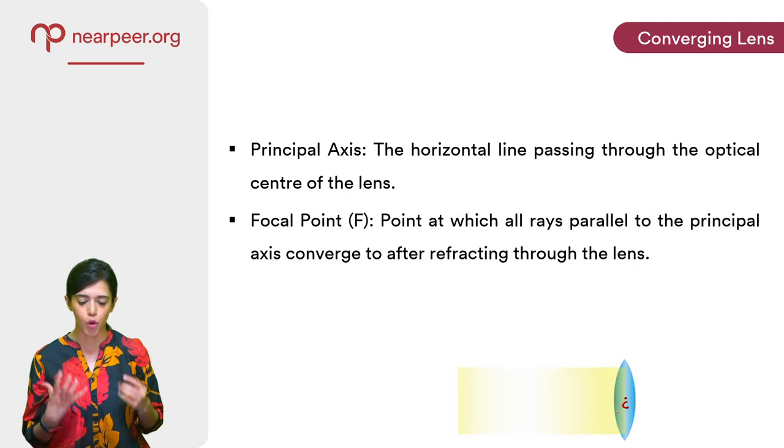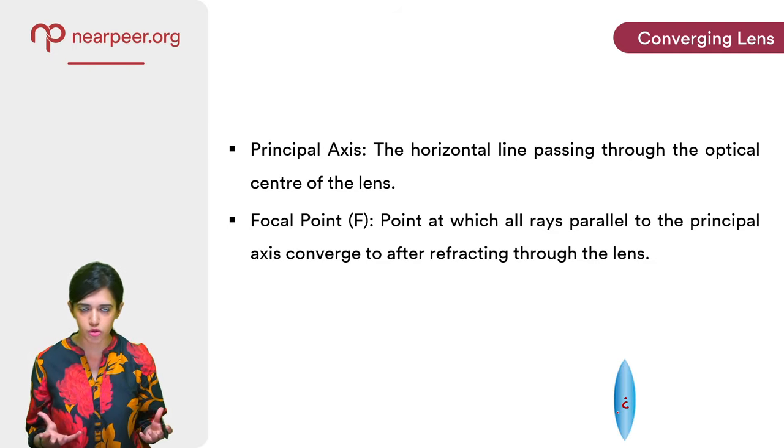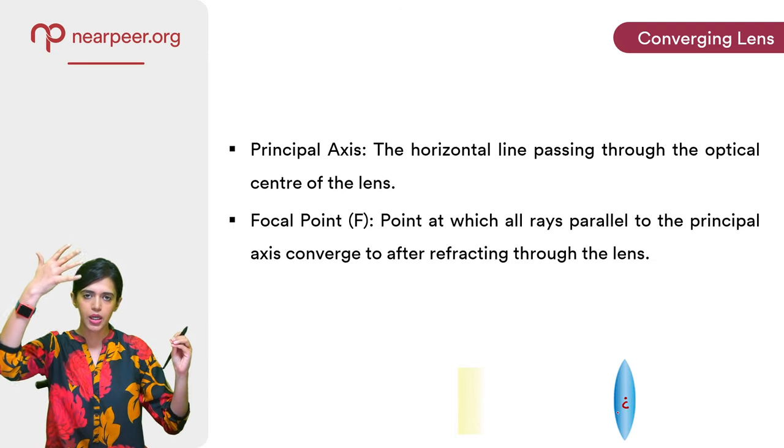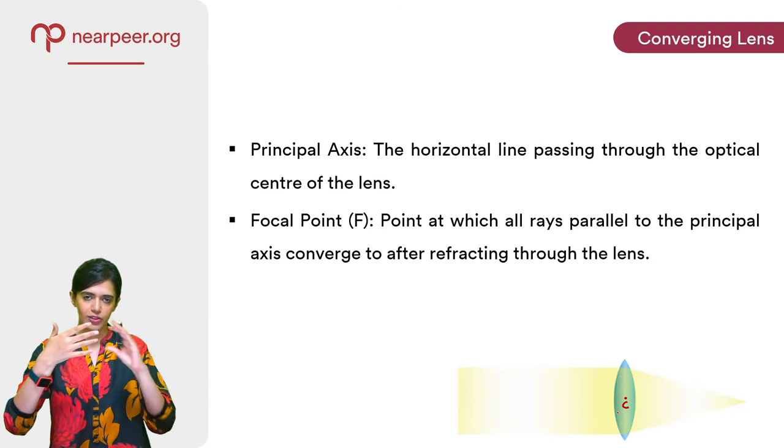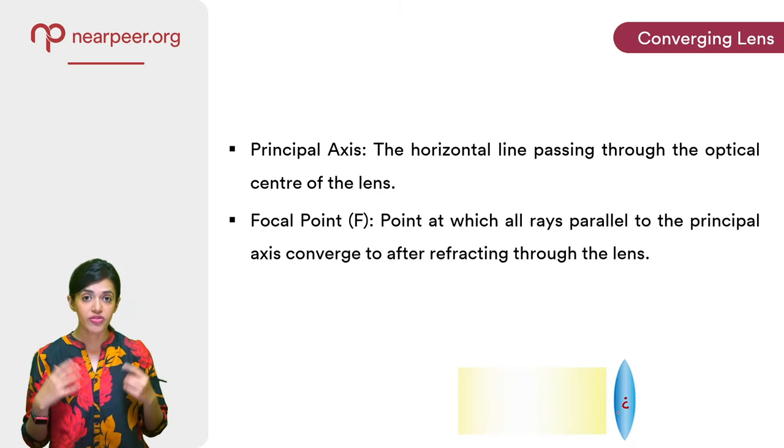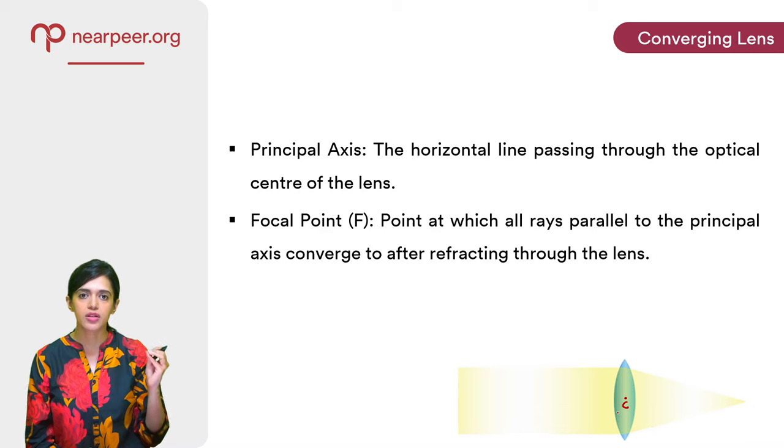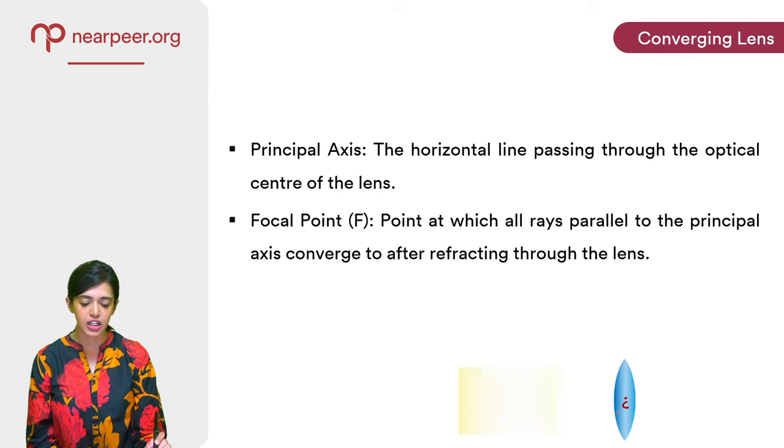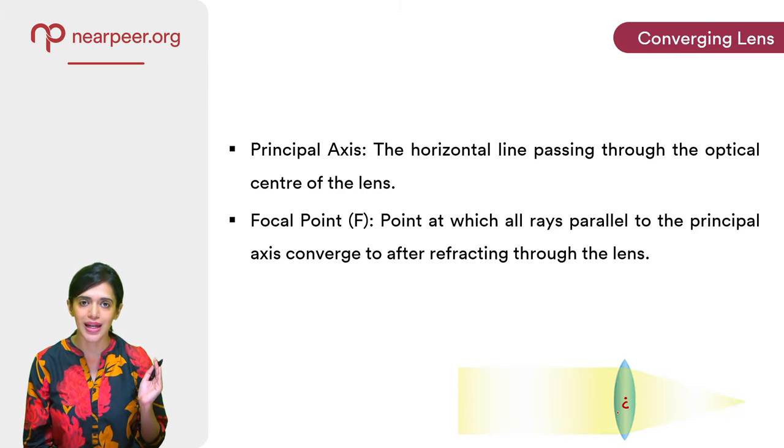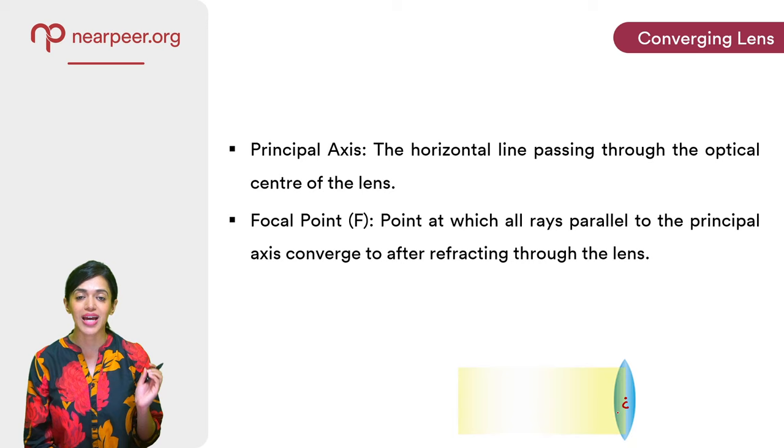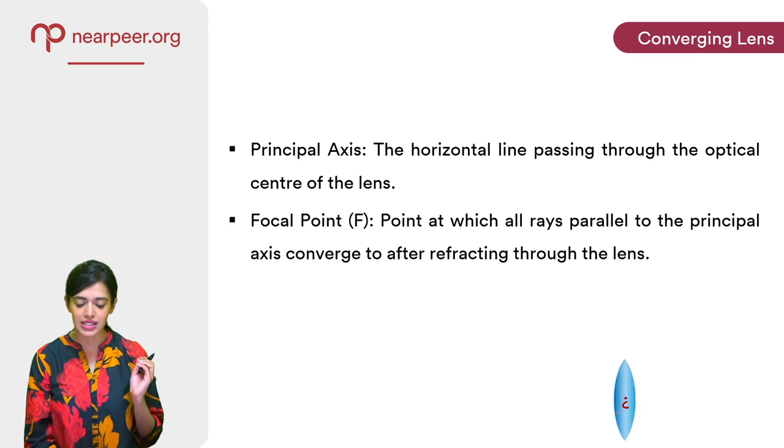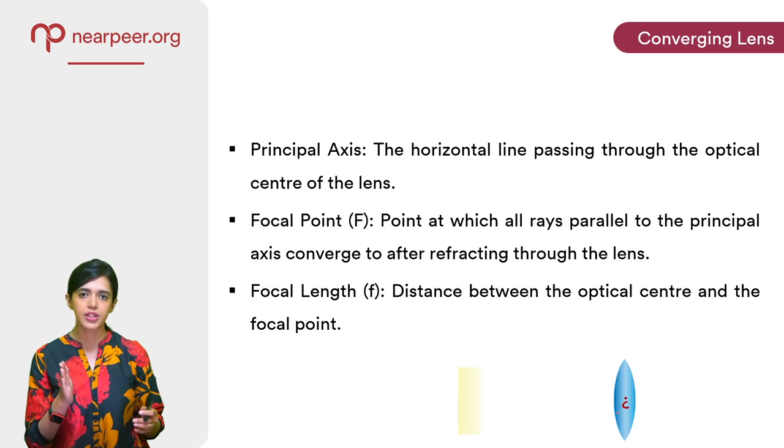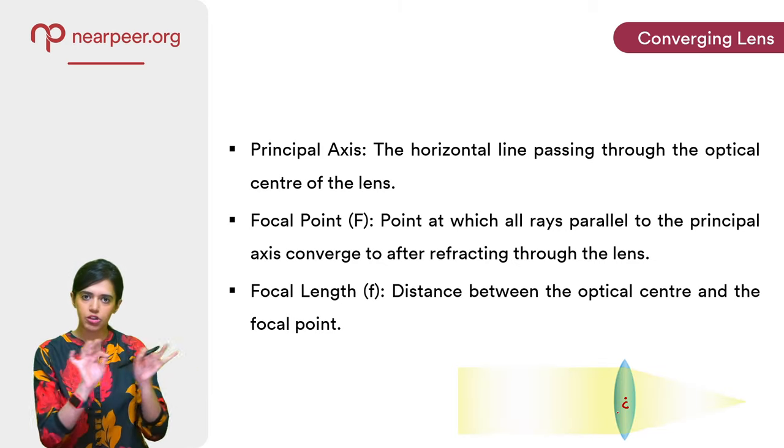Next up we have the focal point. We just discussed it not more than two minutes ago that a converging lens converges, it brings to a point all the parallel rays of light that enter that lens. So that point onto which they were converging is known as the focal point. Point at which all rays parallel to the principal axis converge to after refracting through the lens. This is known as the focal point and it is denoted by an uppercase F. Lastly we have focal length which is denoted by a lowercase f. It is the distance between the optical centre and the focal point, the literal distance between these two.